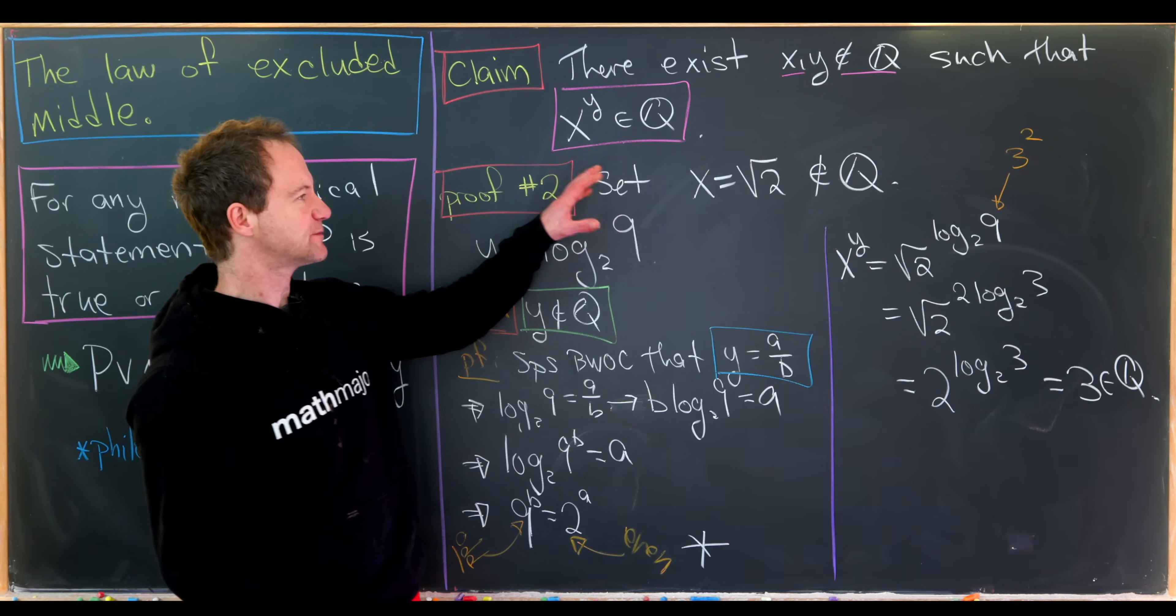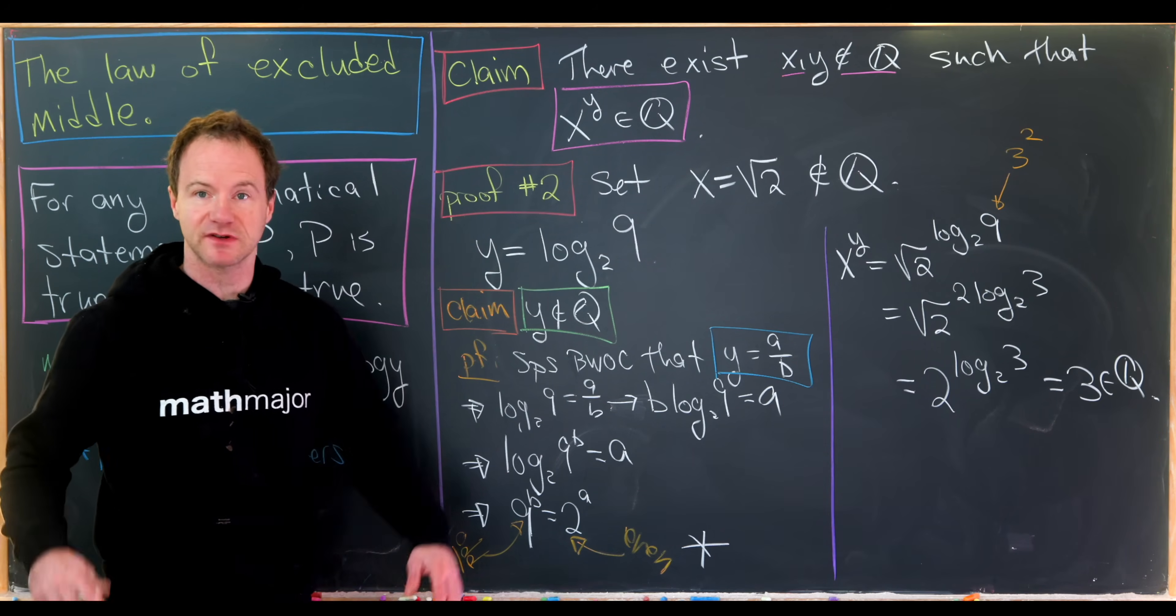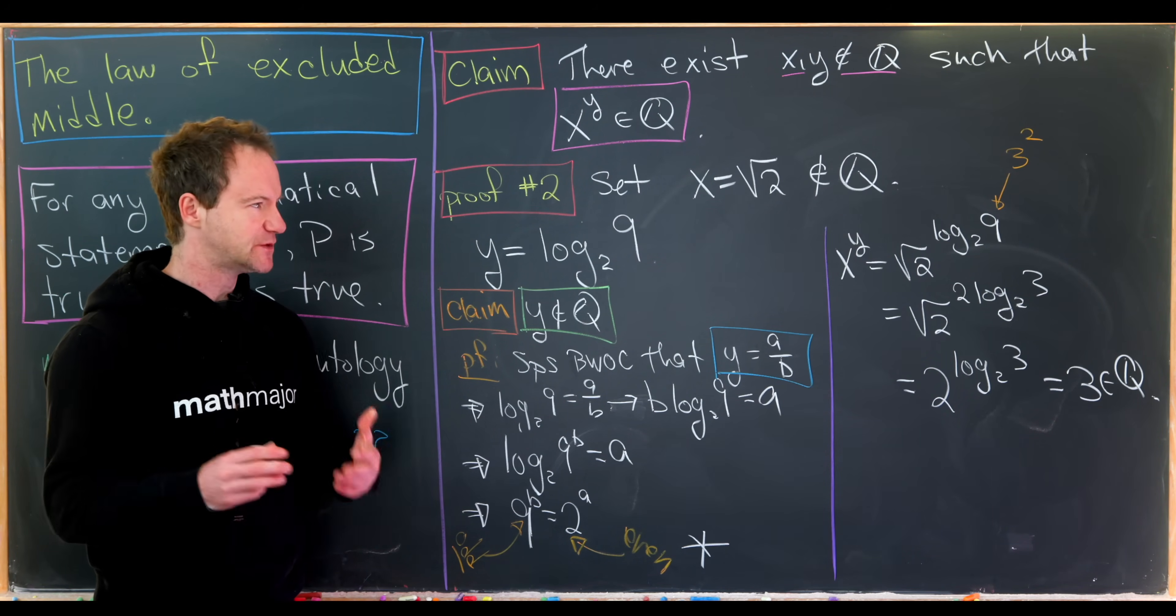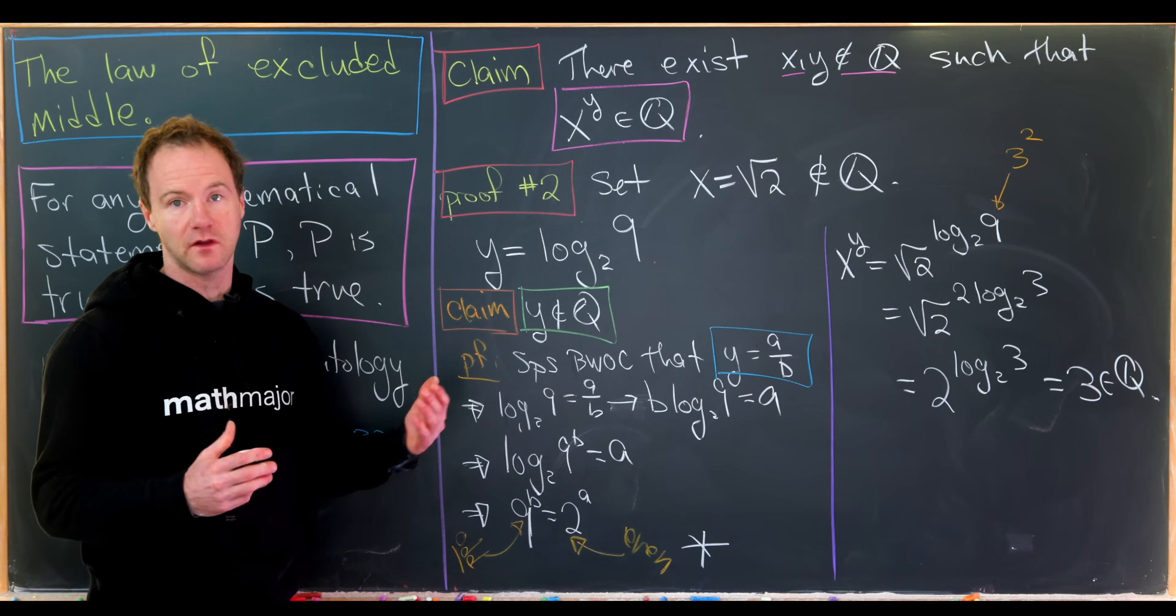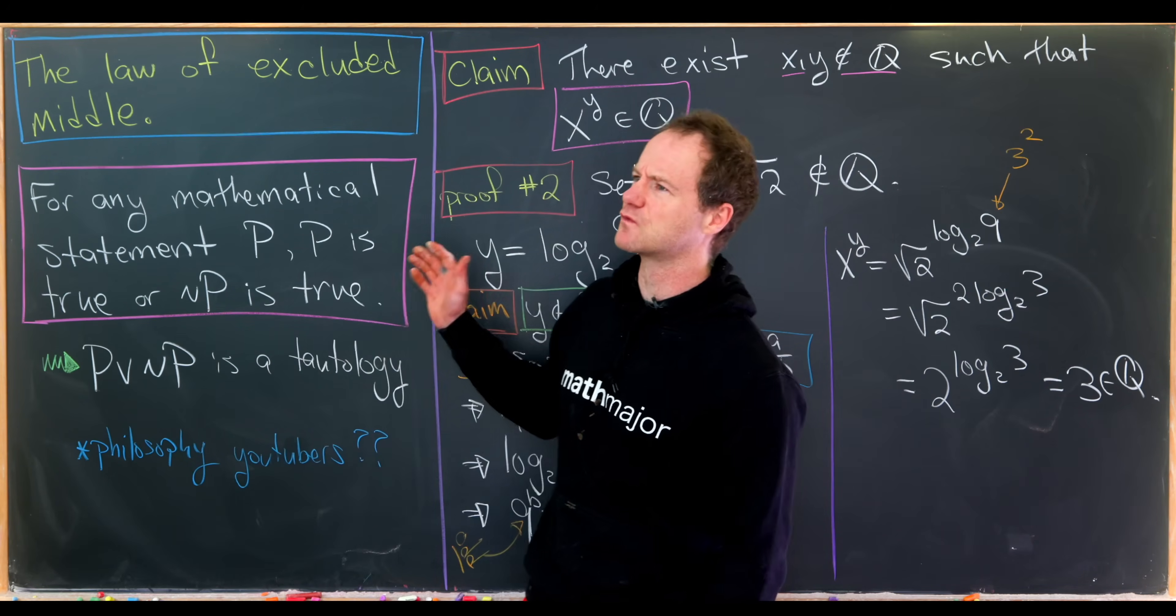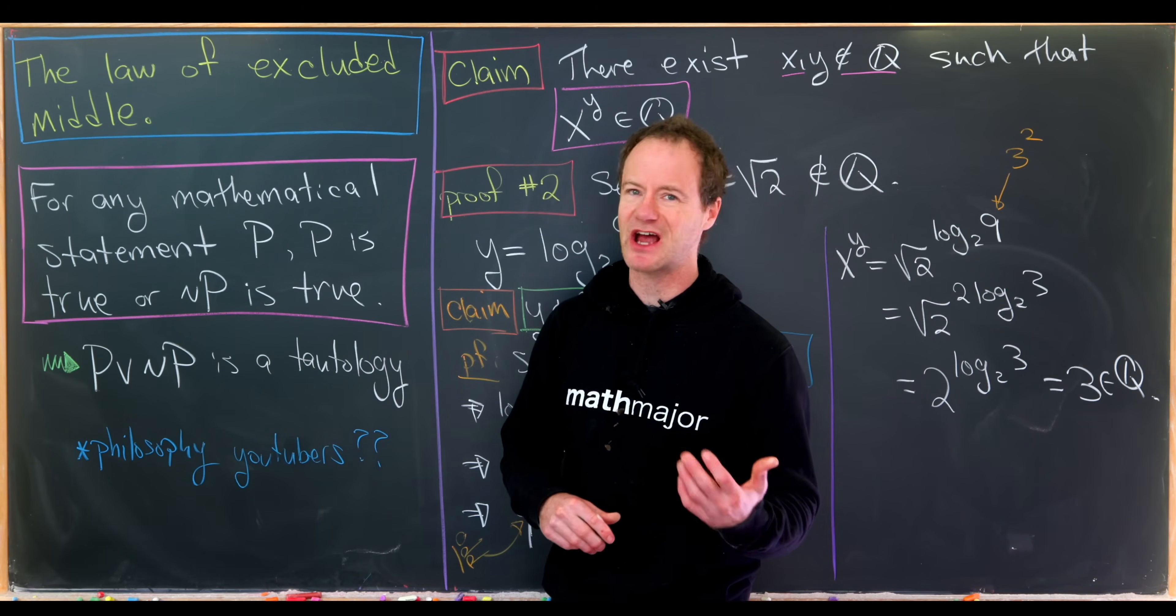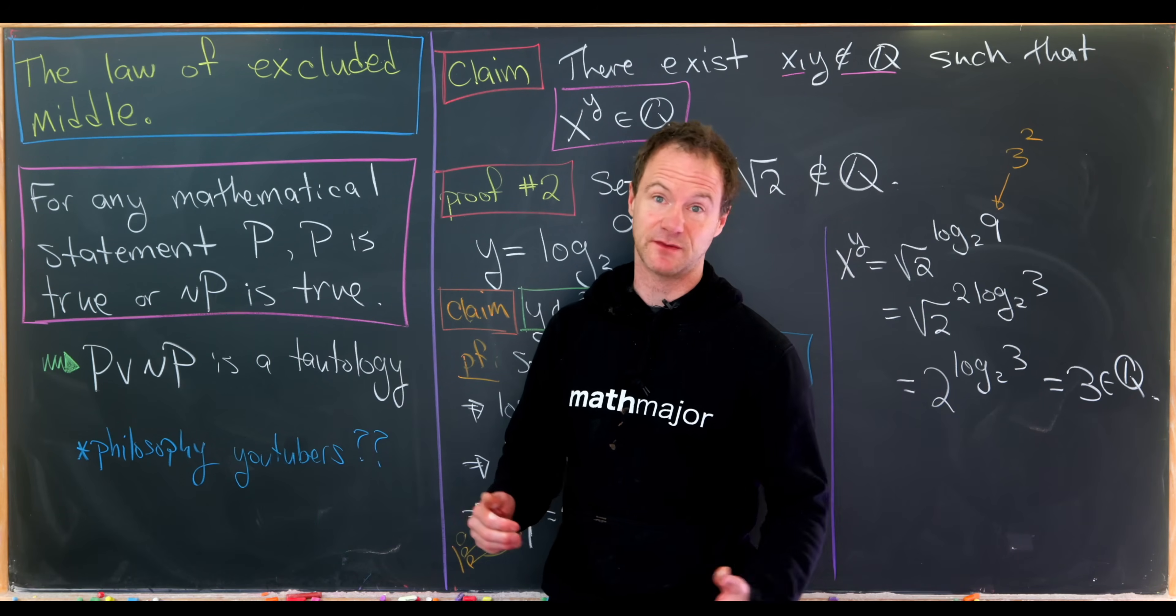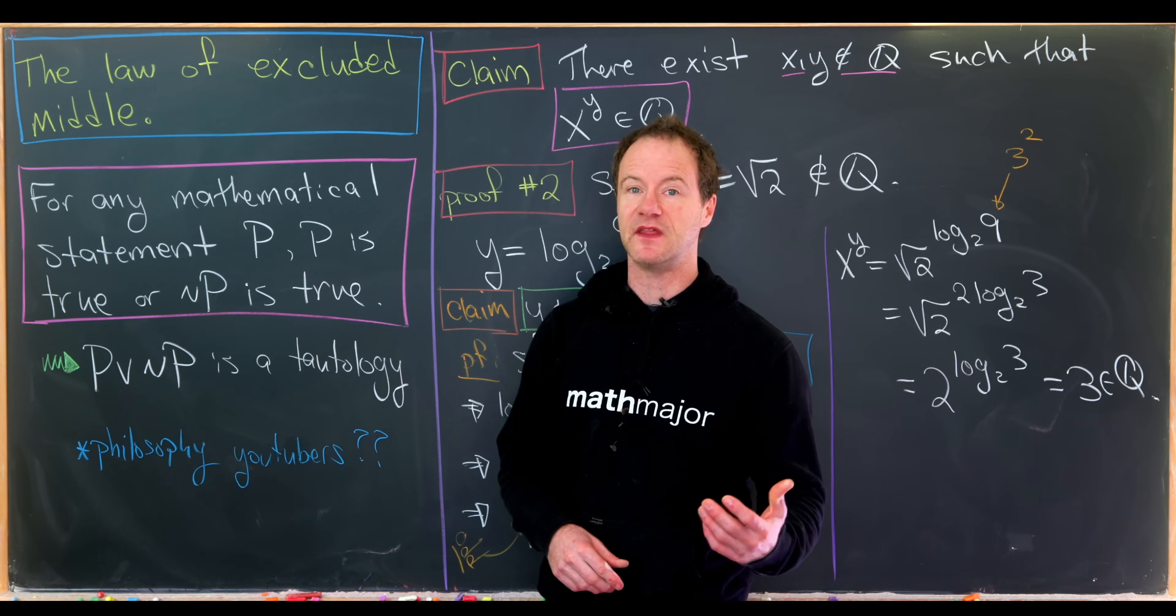Okay, good. So we've got explicit examples of irrational numbers that exponentiate to rational numbers, which in fact means we didn't need to muck about with the law of excluded middle like in our first proof. That being said, I think it's a really interesting logical topic, which I don't know much about. But like I said, if anyone out there wants to do a collab on something like this, I'd be down. And that's a good place to stop.